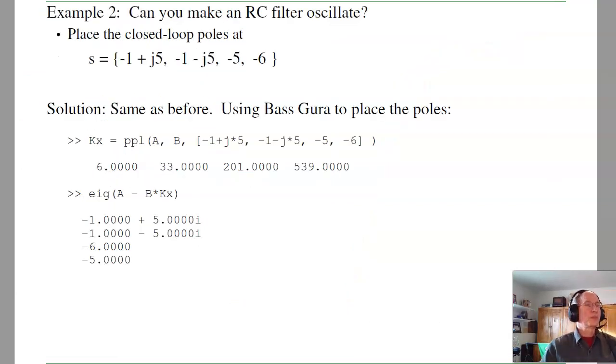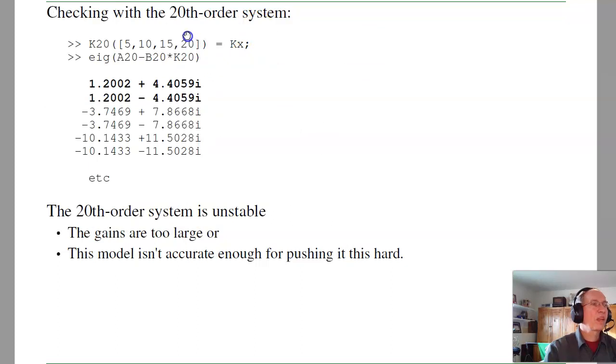Another example. Can I make a heat equation oscillate? And the answer is yes. It'll take a big input to do it, but I can do it. Pole placement can put the poles anywhere. I can put the poles at minus 1 plus minus j5 if I want. It's going to take a huge feedback gain, but it'll do it. If I check the poles of the 20th order system, however, it's unstable. What's happening is I'm pushing the system too hard. My model is no longer accurate if I want to get that quick response. I need a better model, a more accurate model. So this model isn't accurate enough to push it that hard. If I were to slow it down, I could probably put the poles, say, minus 0.2 plus minus j0.5. Something slow I can get, but not something that quick.